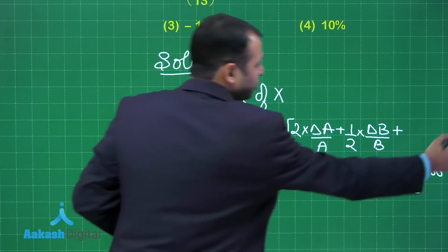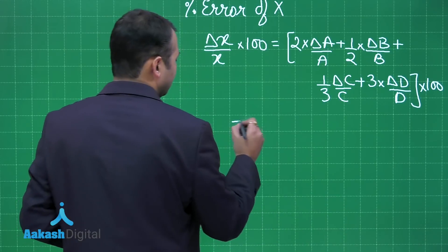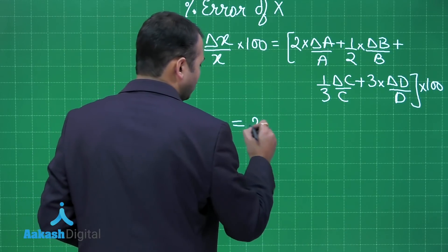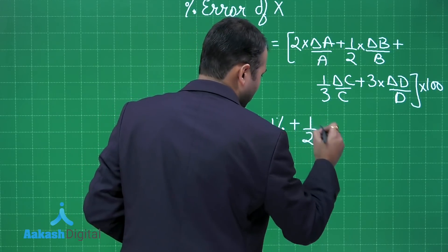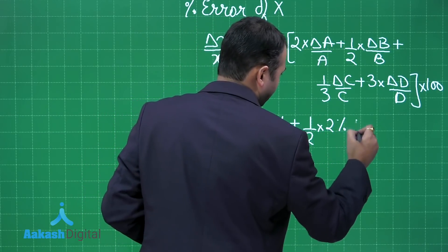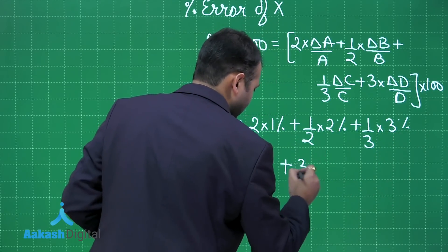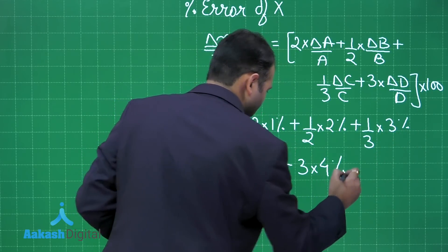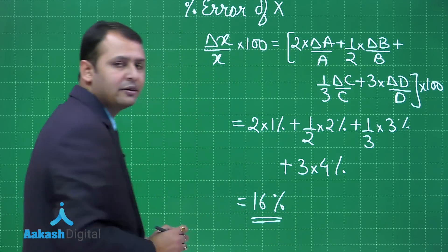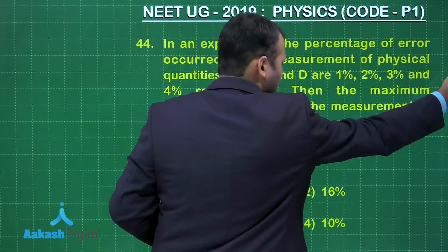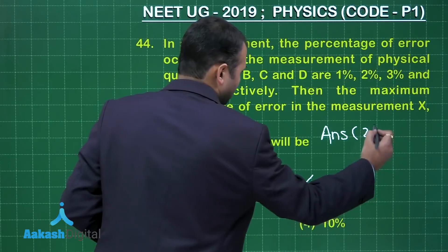Now when you put down the values, you already are aware of the percentage errors of A, B, C, and D. The percentage error of x would be equal to 2 into 1% plus half into 2% plus 1 third of 3% plus 3 into 4%. Solving this you will get error of x as 16%. So percentage error in x would be 16%. So option number 2 is the right answer to this question.